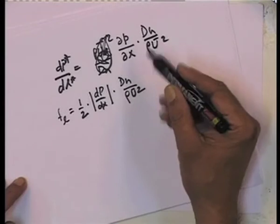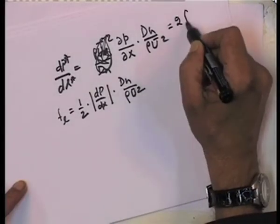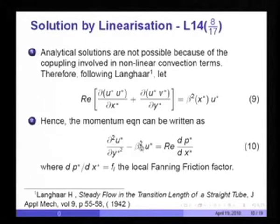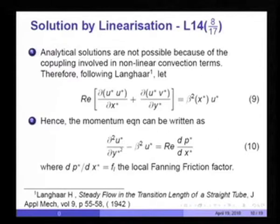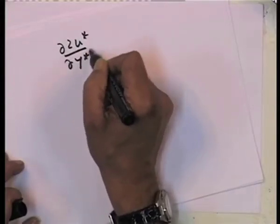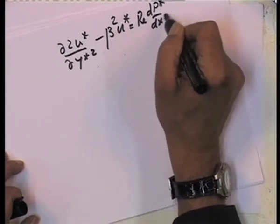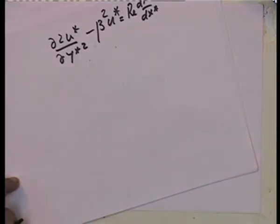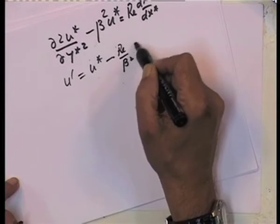We then define u' = u* − (Re/β²)(dp*/dx*). Substituting for u*, since dp*/dx* is a function of x only, differentiating with respect to y gives: d²u'/dy*² − β²u' = 0. The boundary conditions are: u* = 0 at the wall (y* = 0), and du'/dy* = 0 at the axis of symmetry where y* = 1/4, since d_h = 4b.